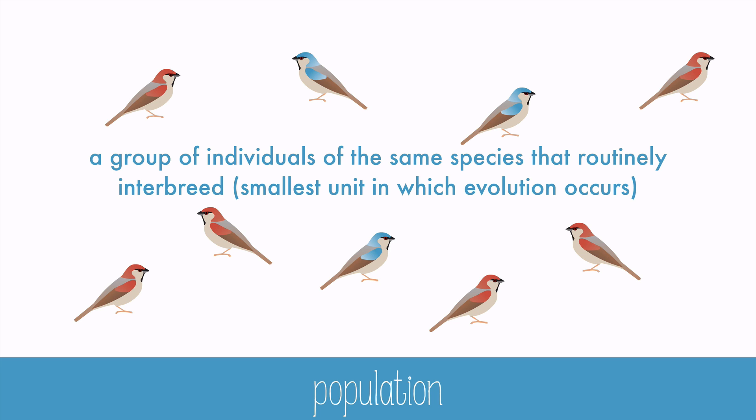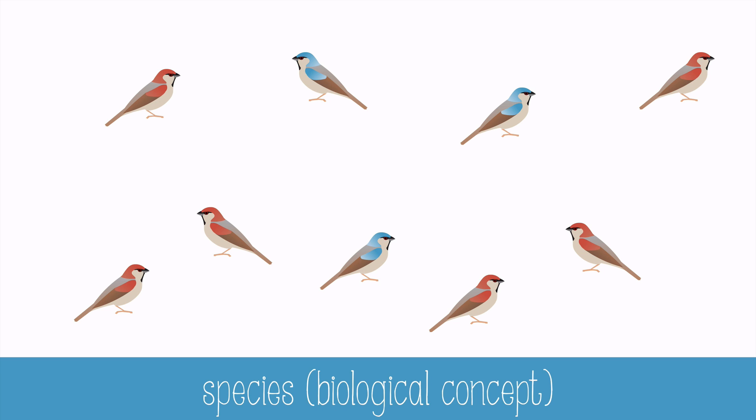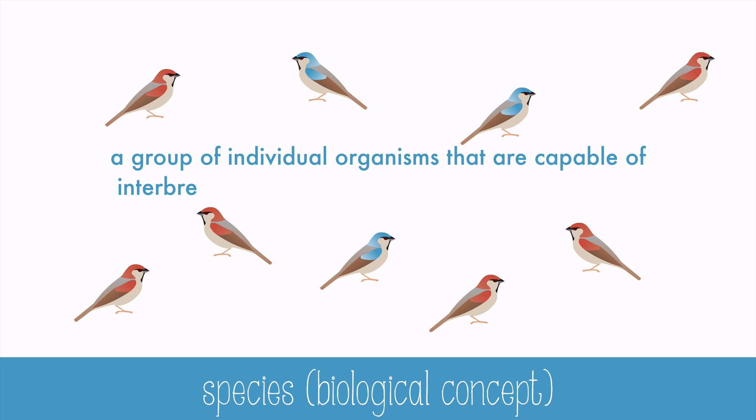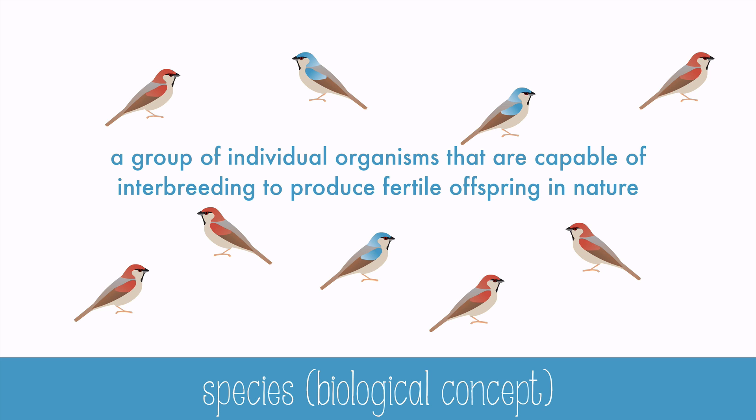Many people mistakenly think that evolution occurs in one individual, but actually it happens among a group, a species. There is some difficulty in defining a species, but we'll start with the biological concept: a group of individual organisms that are capable of interbreeding to produce fertile offspring in nature. Some animals of different species will breed in captivity but not in the wild, so the biological concept is specific enough to keep these as unique species.